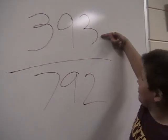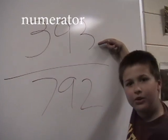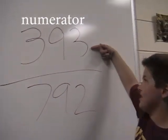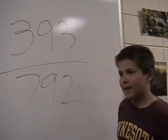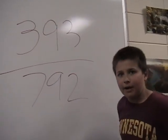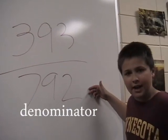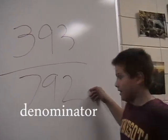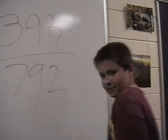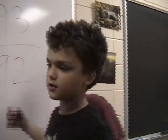The top of the fraction is called the numerator — it doesn't matter if it's small or greater. The bottom number is the denominator. This will help you if you have a test later.